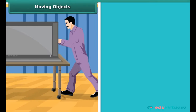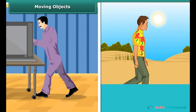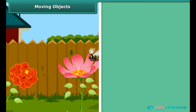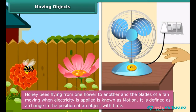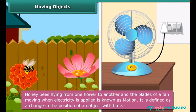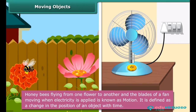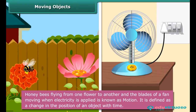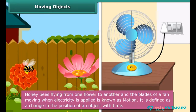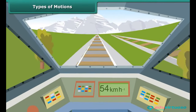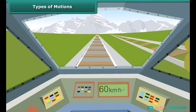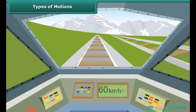You will notice that there are objects that move when you apply force or are moving on their own. For example, you will see honeybees flying from one flower to another. You will also notice that the blades of a fan move when electricity is applied. This is known as motion. Motion is defined as a change in the position of an object with time. The change in its position can be determined through distance measurements.